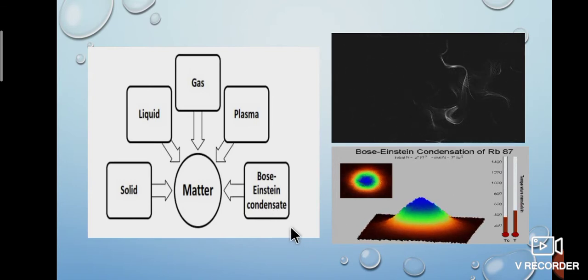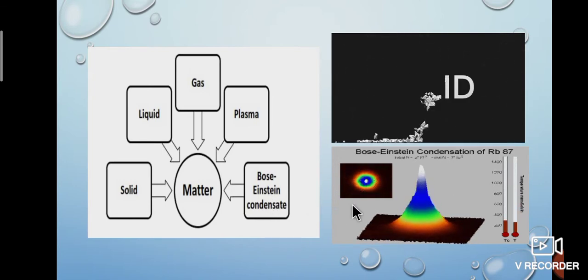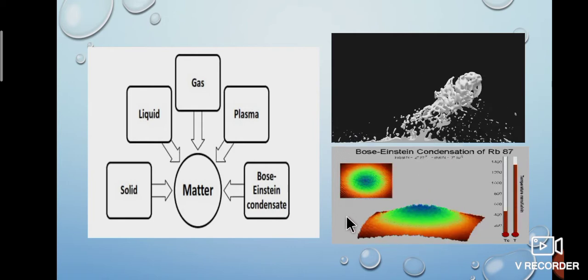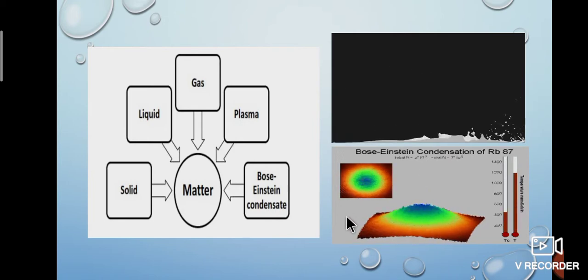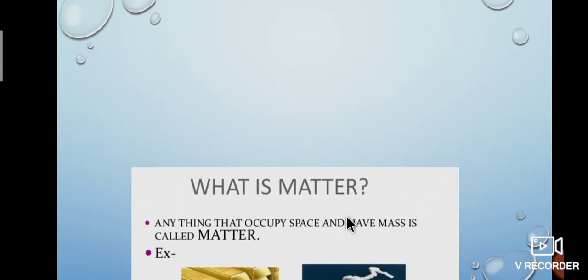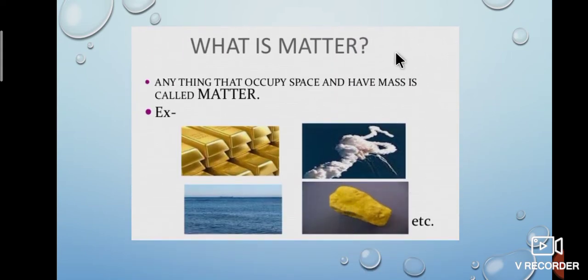See the picture — you get an idea. Due to increasing temperature, the states of matter change. Now, what is matter? Anything that occupies space and has mass is called matter. Examples: gold, sea, wind, stone, etc.